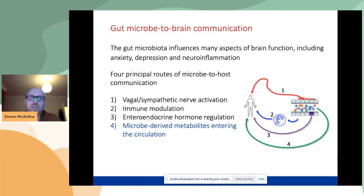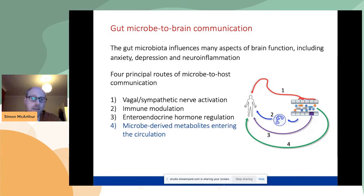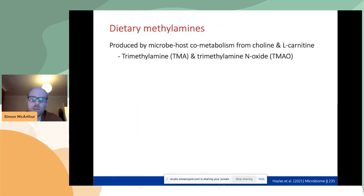We know there are at least 200 different microbial-derived metabolites floating around in our blood at any one time. We know far less about what they do and how they can influence the brain — that's basically what my group is looking at. In this talk, I'm going to discuss the dietary methyl amines, which are a particular group of metabolites.